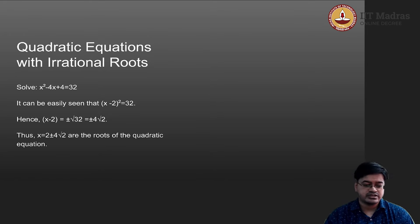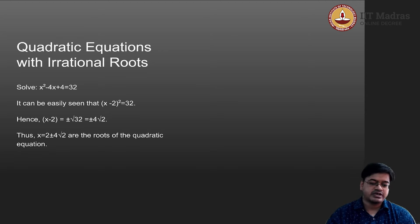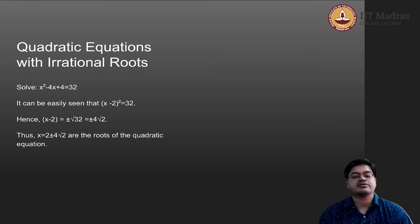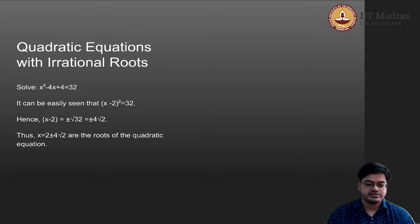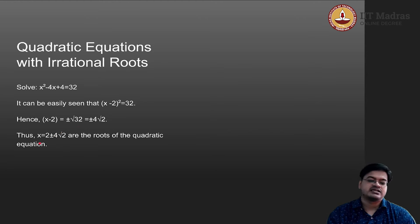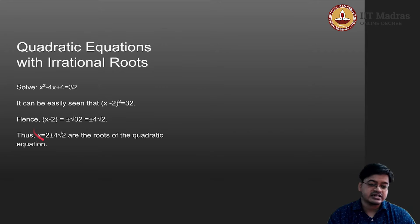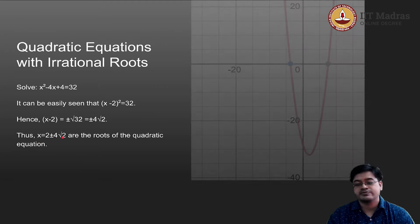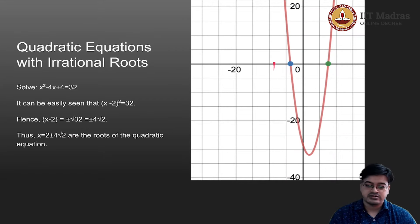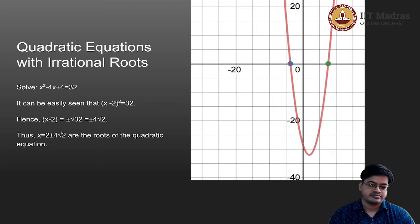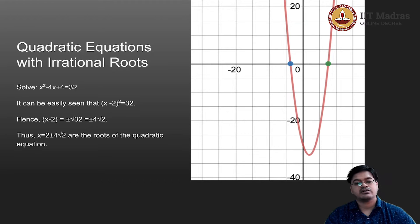So you will get two roots: 2 plus or minus 4 root 2 are the roots of the quadratic equation, and they are irrational roots because root 2 is an irrational number. It is interesting to verify this result using a graph, because that will give us a clear understanding of where 2 plus or minus 4 root 2 are mapped. The two green dots represent the location of the roots. This is how you solve a quadratic equation using the method of completing the square.